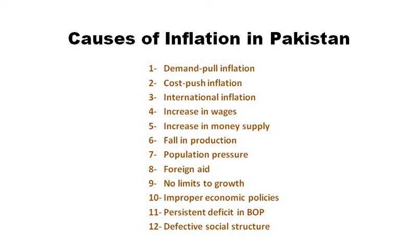Regarding foreign aid: it was earlier thought that foreign aid would remove the resource gap. But that did not happen in Pakistan. Most of the aid given was tied to political relations. The loans were given for unproductive purposes. Productive loans were given for projects with long time periods, such as dams, power plants, and steel mills, which do not generate output quickly. While expenditure on these projects increases money supply, prices start rising.